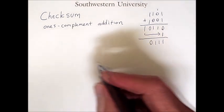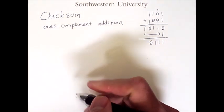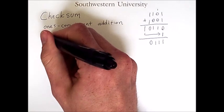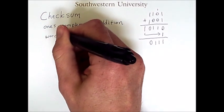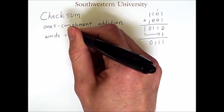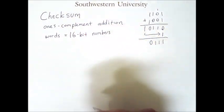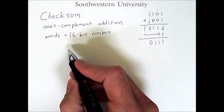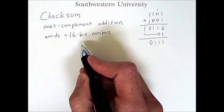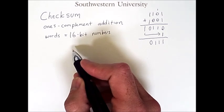Now, to calculate the checksum, we'll be needing to do one's complement addition of words, which in the context of this video means 16-bit strings. So a word is a number consisting of 16 bits. And to make it easier to depict these values, I'll be using hexadecimal.